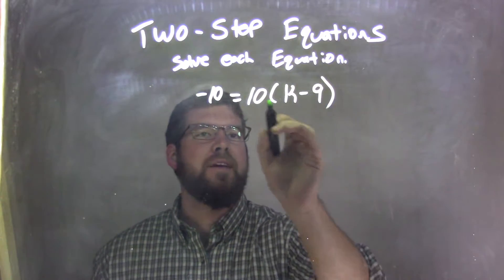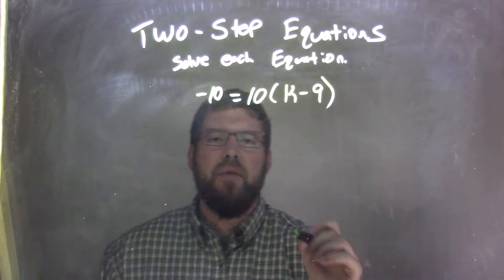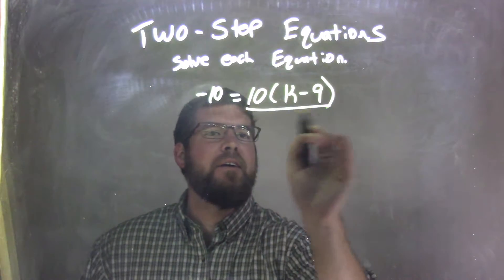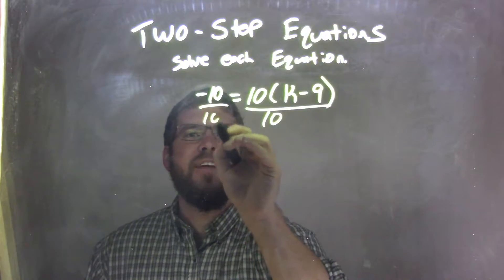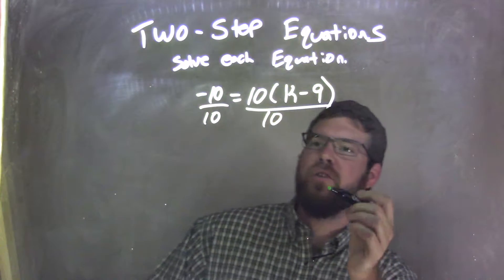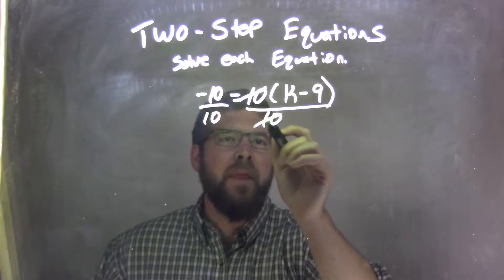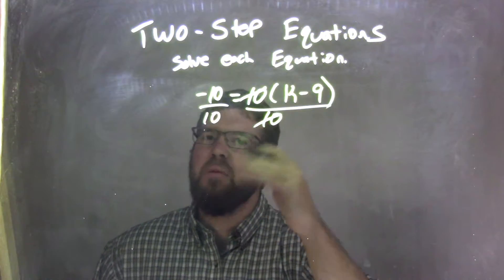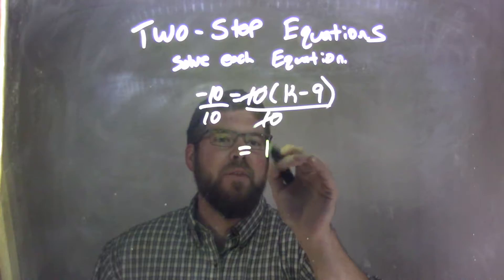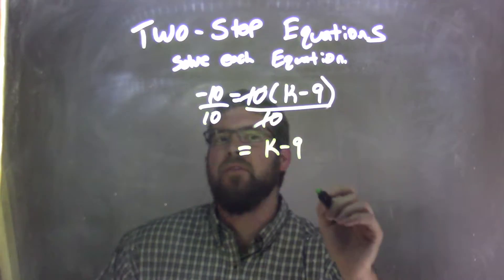My first step here is I see there's that multiplication outside the parenthesis, so I'm actually going to divide by 10 first. That's the opposite of multiplication. This allows me to cancel these 10s out, leaving a 1 there, and 1 times anything is anything, so I'm just going to leave that out, and I'm left with k minus 9, and I don't need the parenthesis anymore.